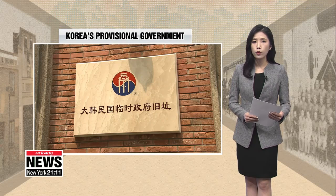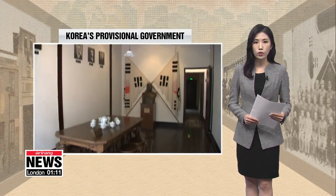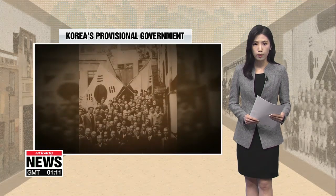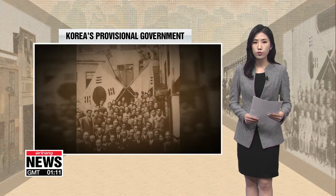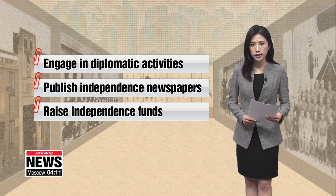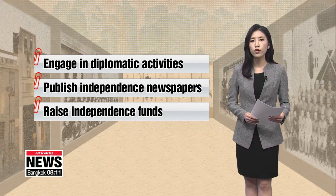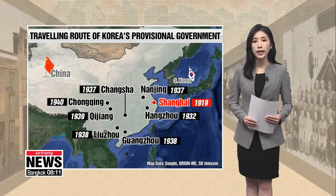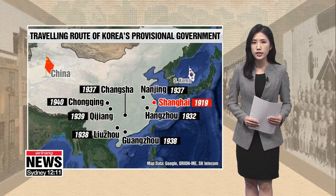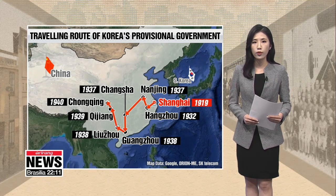Shanghai was an ideal place for the unified provisional government, because it was an international city and was out of Japan's reach at the time. In Shanghai, the provisional government engaged in diplomatic activities, published and distributed newspapers to inform the world of Japan's atrocities, and raised funds for the independence movements. After 13 years in Shanghai, the provisional government had to keep moving to different cities within China, passing through Changsha and Guangzhou to evade the constant threat of discovery and the Sino-Japanese War.